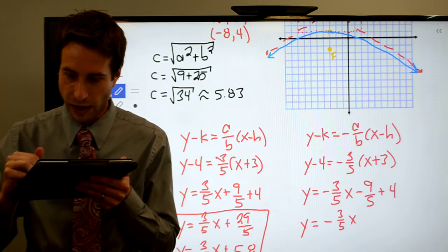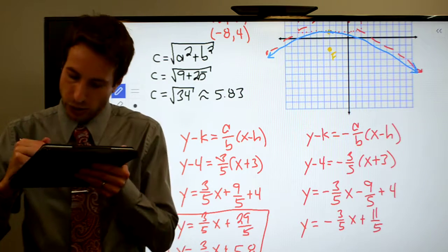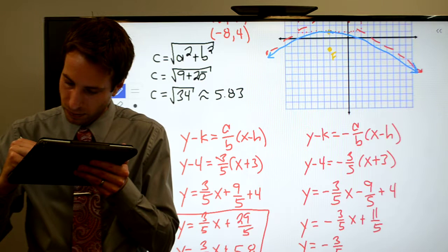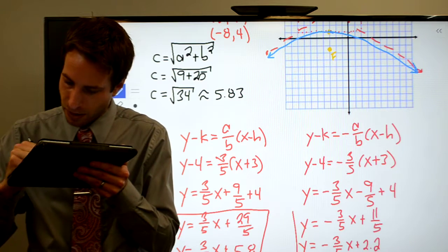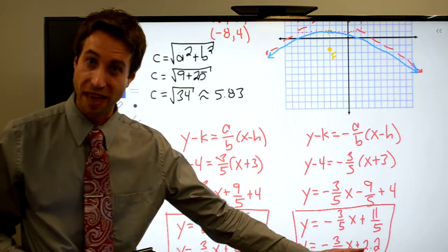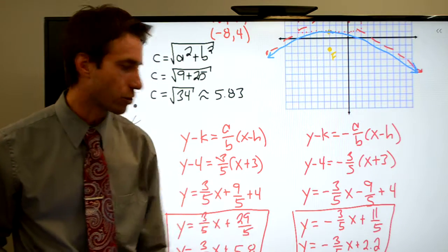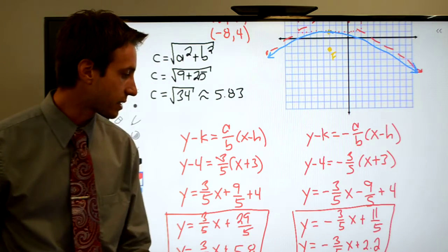It should be 11 fifths, which as a decimal is 2.2. Both mean the exact same thing. If I were graphing, I'd probably graph that one. Generally easier to graph decimals. But if it were a multiple choice question, almost always I'll leave those in fractional form. And that takes care of the asymptotes.